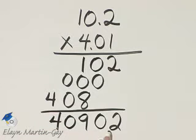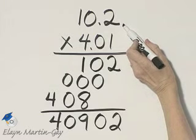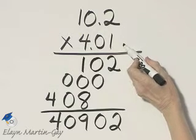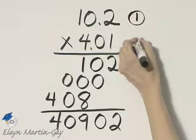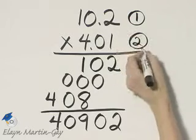The question is, where do we place the decimal point in the product? Notice there's 1 decimal place here, there's 2 decimal places here. 1 decimal place, 2 decimal places.